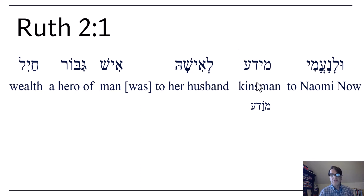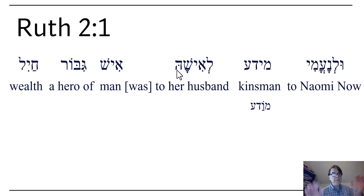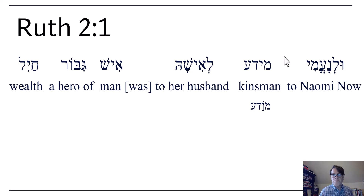So now to Naomi, there was a kinsman. La isha — to her husband. So 'la' is 'to,' the kamats hay with a mapik is a continental hay and it's a possessive 'her.' That's where the 'her' comes from. So 'to her, ish' — to her husband. Now to Naomi, there was a kinsman to her husband, an ish — a man.